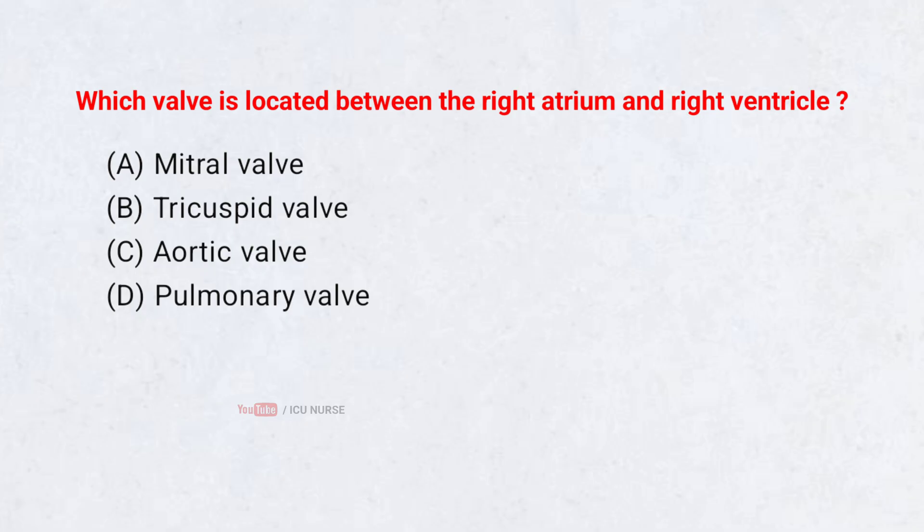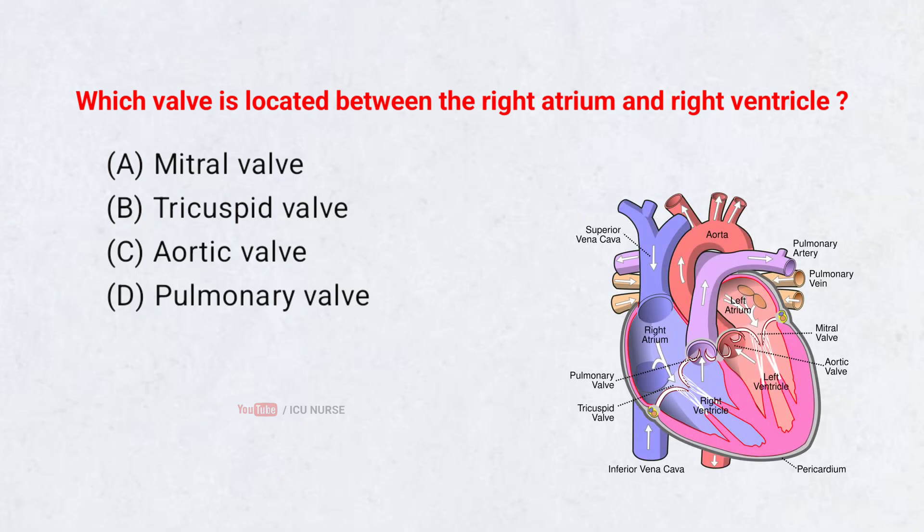Which valve is located between the right atrium and right ventricle? Correct answer B: Tricuspid valve.